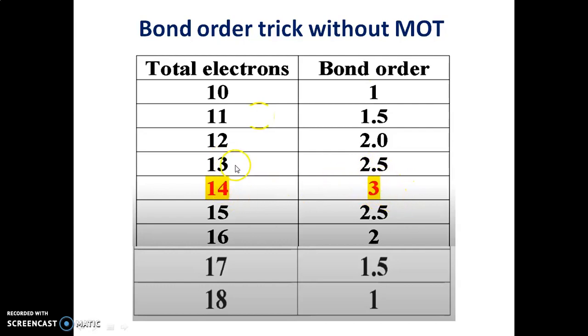From the baseline of 14 electrons giving bond order 3: 13 electrons gives bond order 2.5, 12 electrons gives bond order 2, 11 electrons gives bond order 1.5, and 10 electrons gives bond order 1.